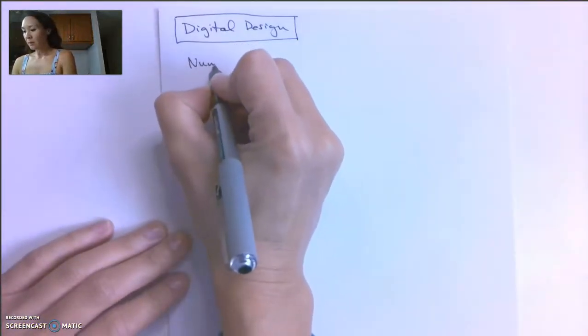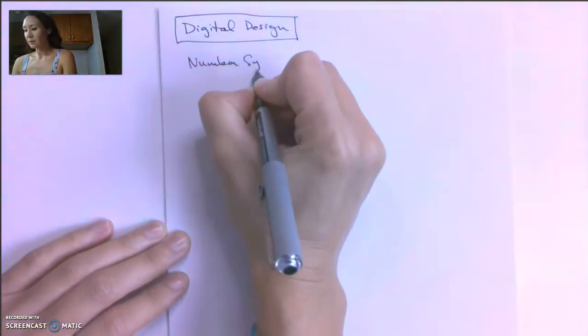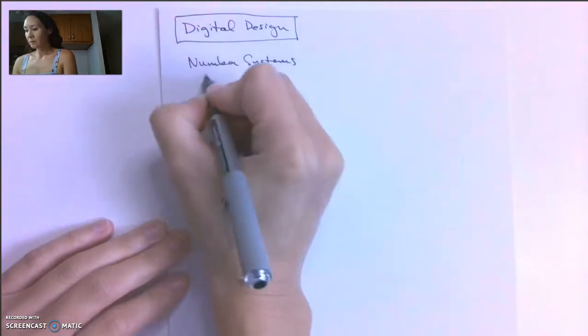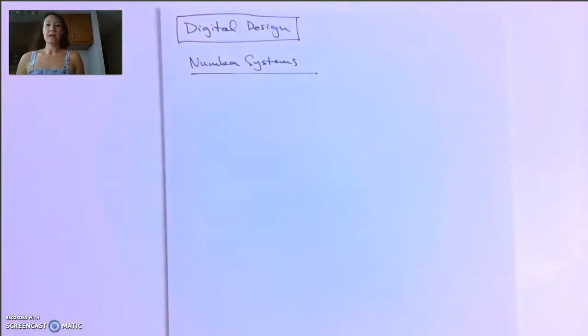Let's talk about number systems. So we live in a base 10 world. Why do you think that is? Probably because we have 10 fingers. If we only had 3 fingers on each hand, like ET hands or something, maybe we would live in a base 6 number system.